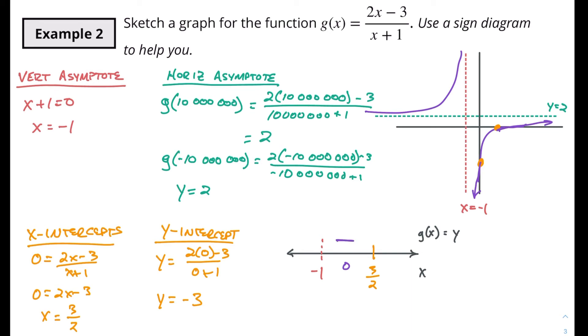And if I put a number bigger than 3 halves into this function, if I do that I'm going to get a positive value. Here's a number bigger than 3 halves so I'm going to be positive there. And then I also know if I put a number really really small, much smaller than negative 1, I'm also going to hit a positive value.